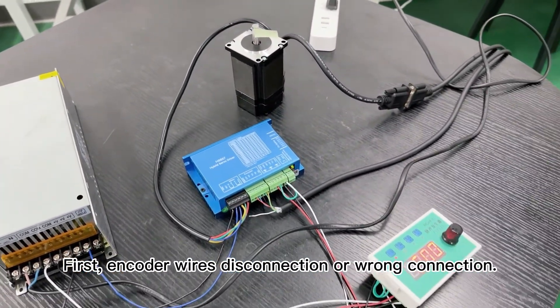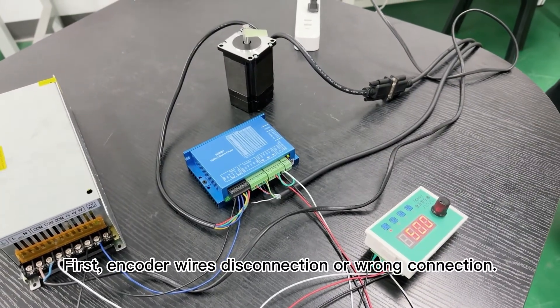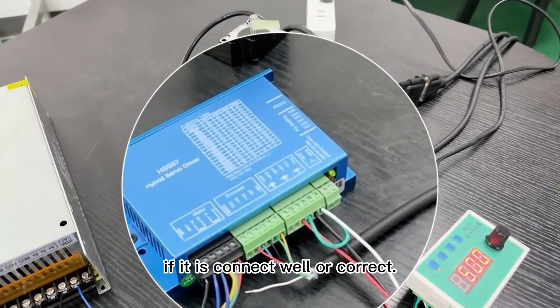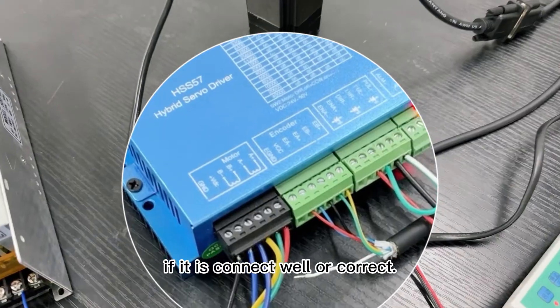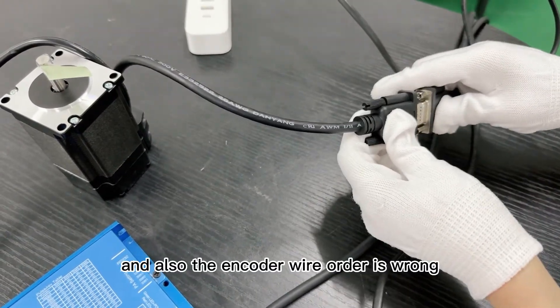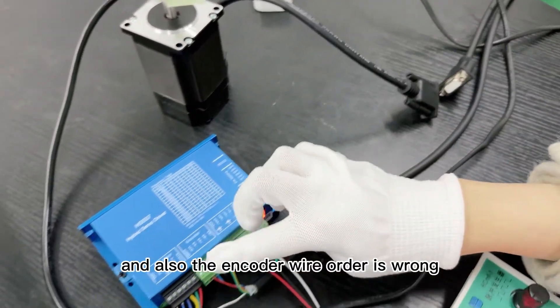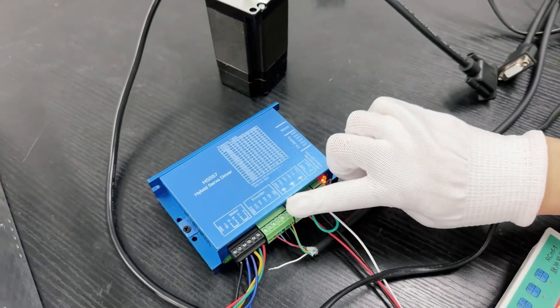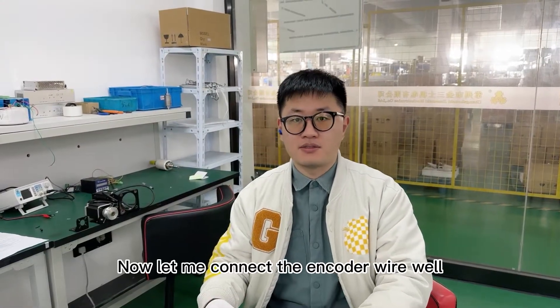First, encoder wire disconnection or wrong connection. So check your encoder wire. If disconnected, reconnect the wire correctly. Look at this - the encoder wire is loose and also the encoder wire order is wrong. Now let me connect the encoder wire.